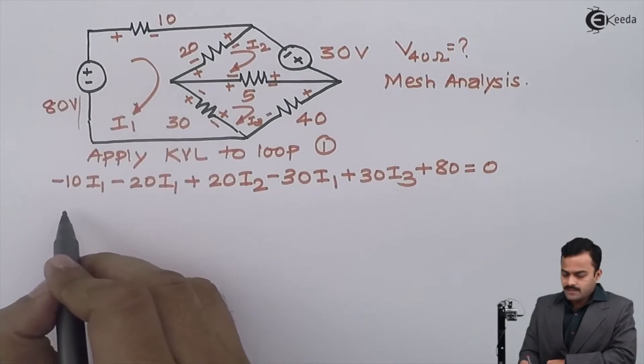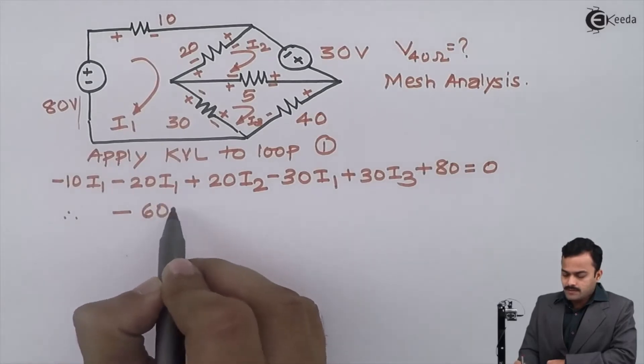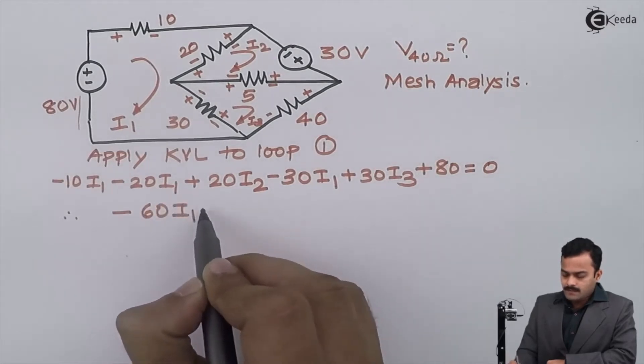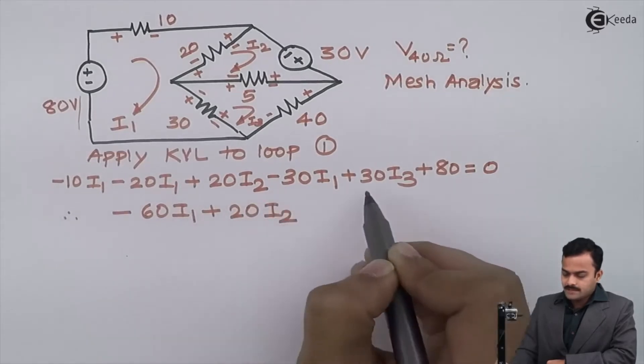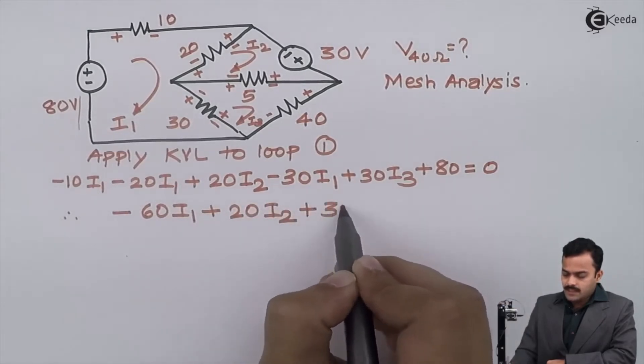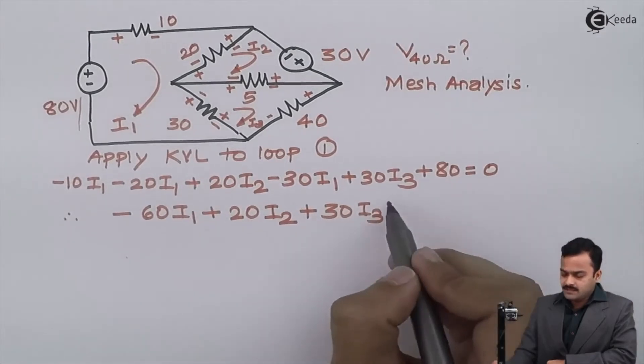And after simplifying, I will have minus 10 minus 20 minus 30 is minus 60 I1, then plus 20 I2 as it is, plus 30 I3 as it is. The constant I will take to other side, so it is minus 80, equation number one.